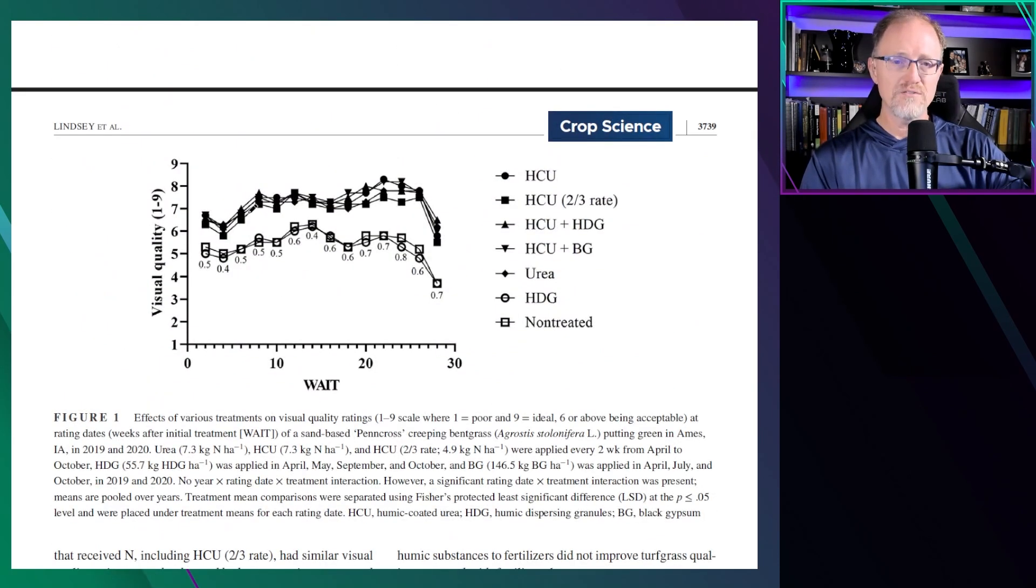When we look at the turfgrass quality over time, week to week basically, the same thing. The humic-dispersable granule alone and the non-treated turfgrass showed a very noticeable decline compared to all the other treatments. You'll see that urea, along with all the other treatments, stood out in a separate group.